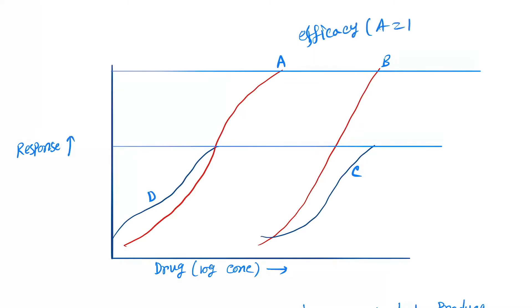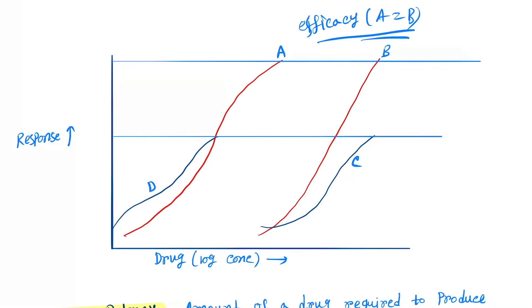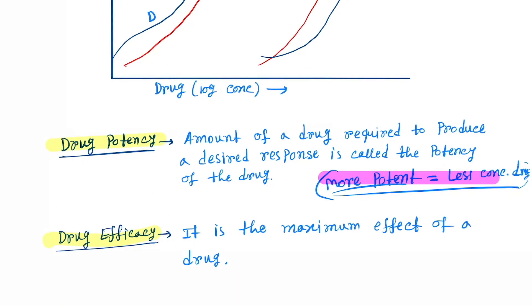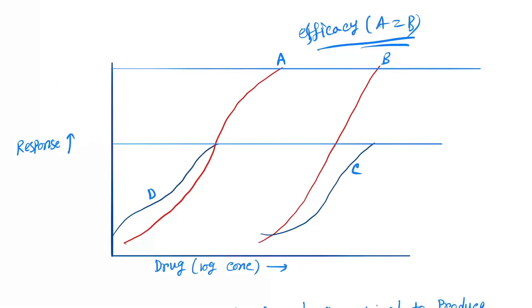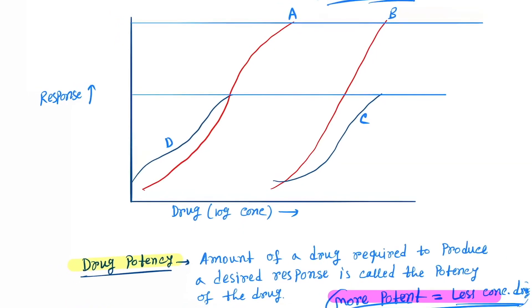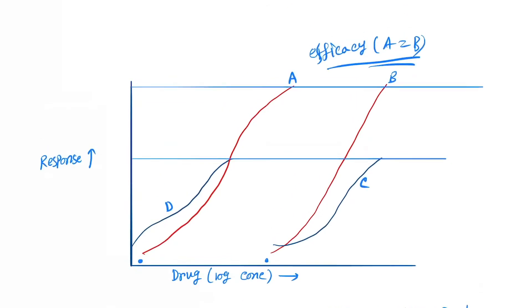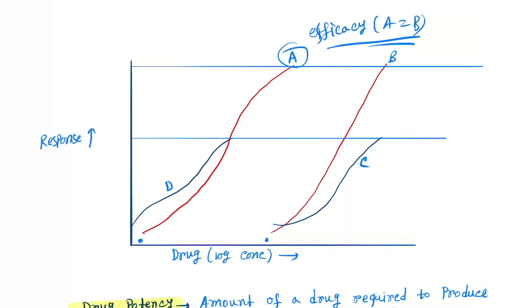Now come to the potency. As we told, more potent means less concentration. In the case of drug A, we need less concentration, so drug A is more potent. Potency A is greater than B.